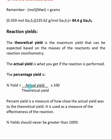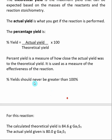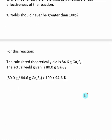The percent yield is just the actual yield divided by the theoretical yield times 100 — it tells us, percentage-wise, how close the actual yield got to the theoretical yield. If you get upward of 80 or 90% of your theoretical yield, that's generally considered a very good reaction. Also note that percent yield should never be greater than 100%; if it is, either you've made a calculation error or there is some impurity in your product. For this reaction, with an actual yield of 80.0 grams of gallium sulfide and a theoretical yield of 84.6 grams, our percent yield is 94.6%.